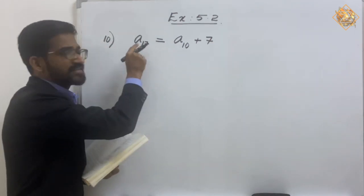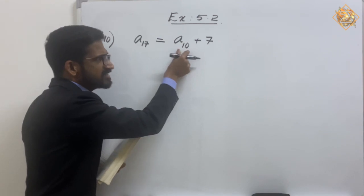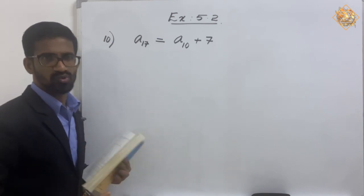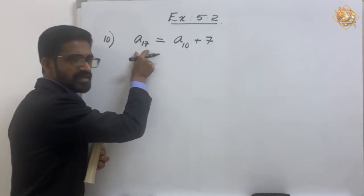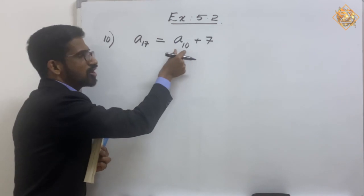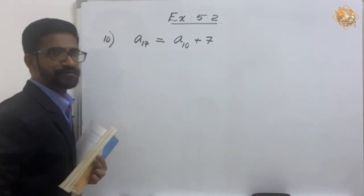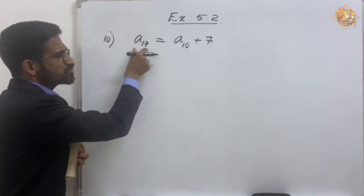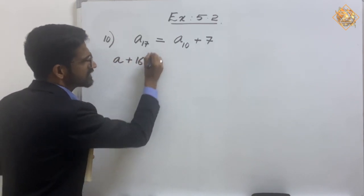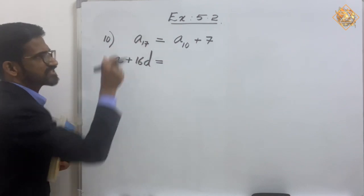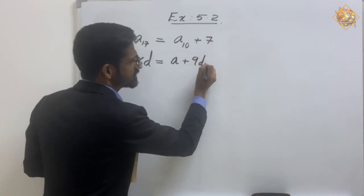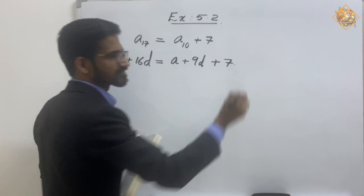This is the meaning of the sentence: 17th term of the AP exceeds 10th term by 7. Read the sentence repeatedly so that it will be easy for you to understand. a17 equals a10 plus 7 means we add 7 to the 10th term. Now we know how to write a17 as a plus 16d, and a10 as a plus 9d plus 7.